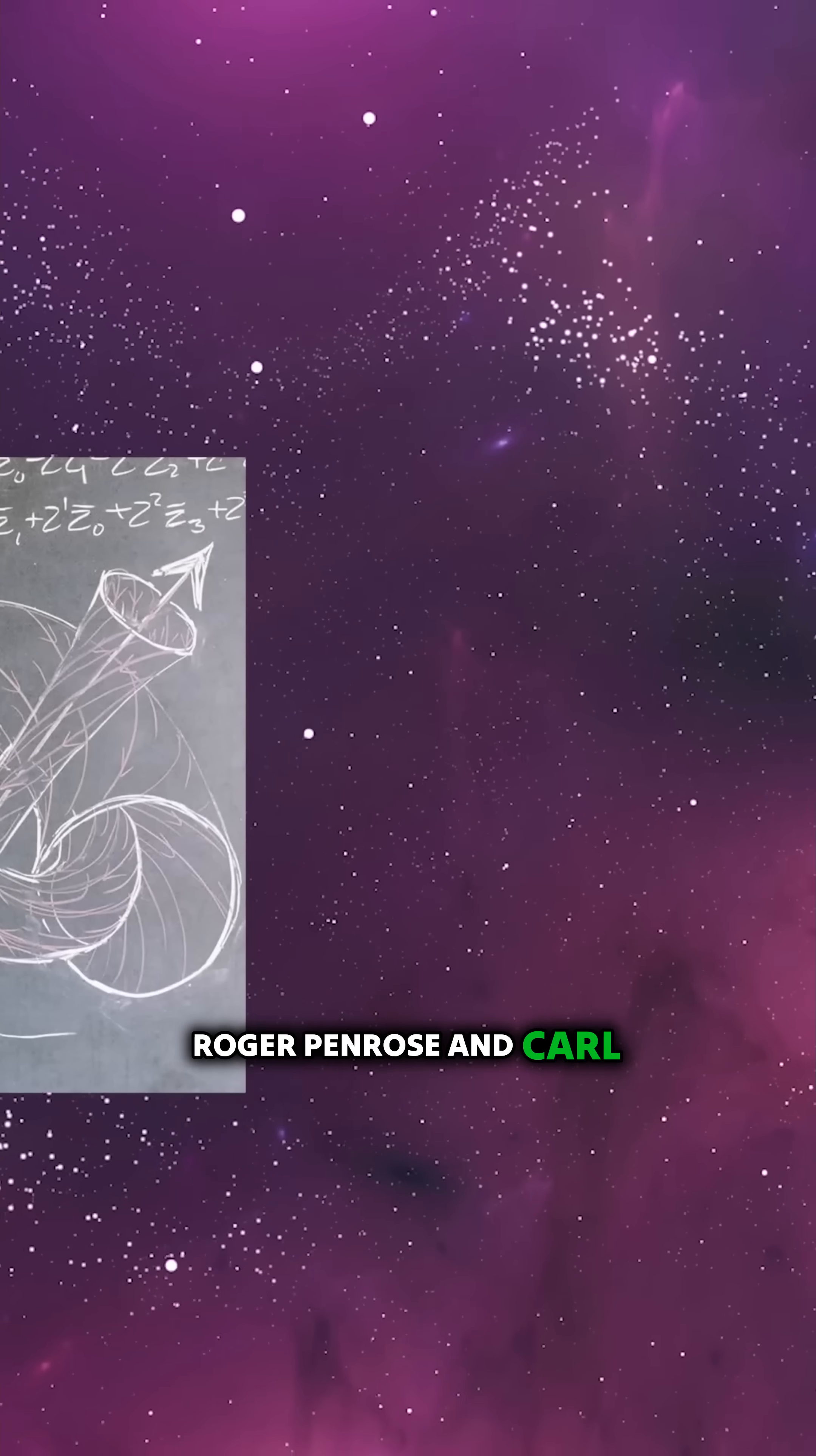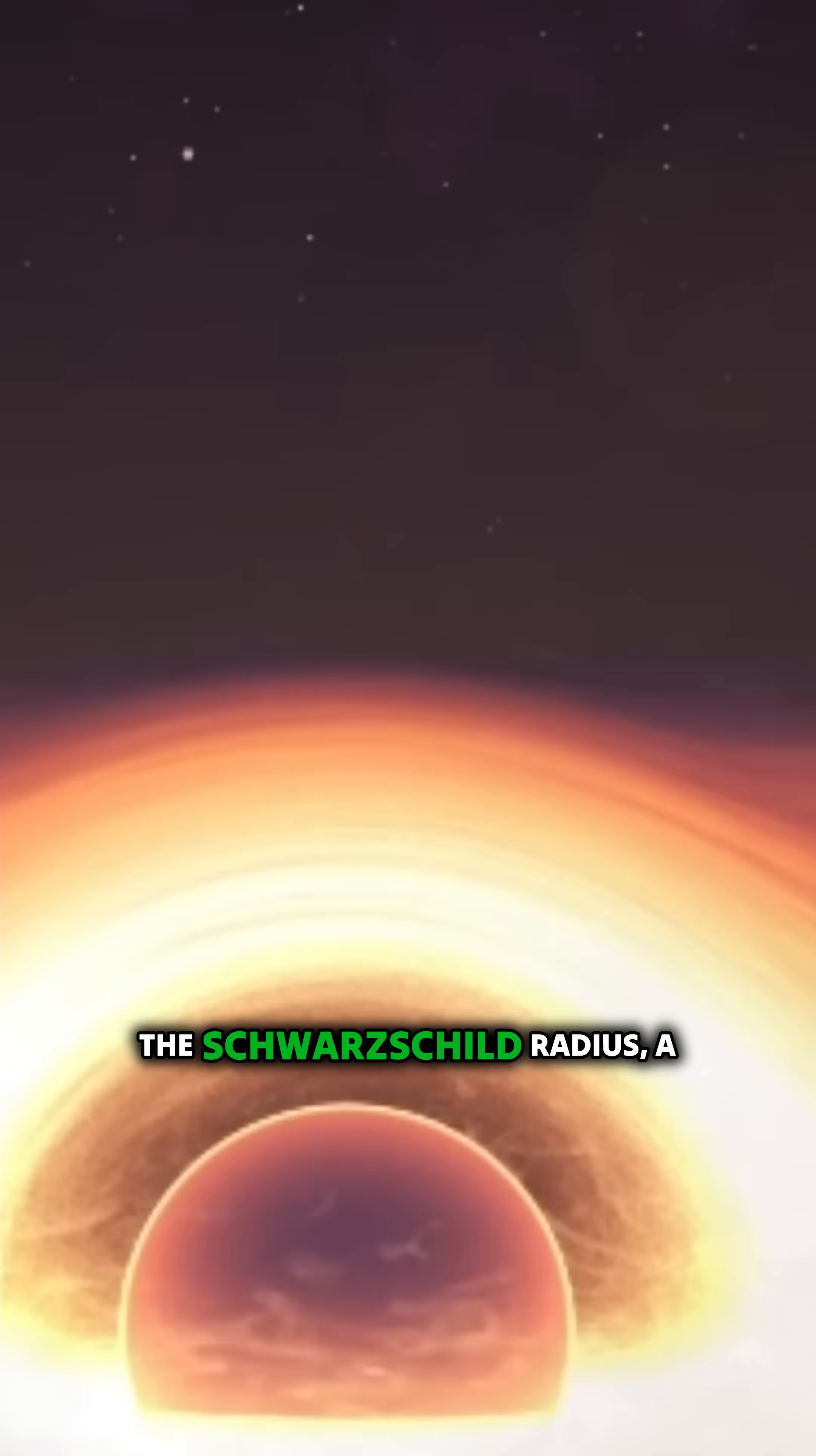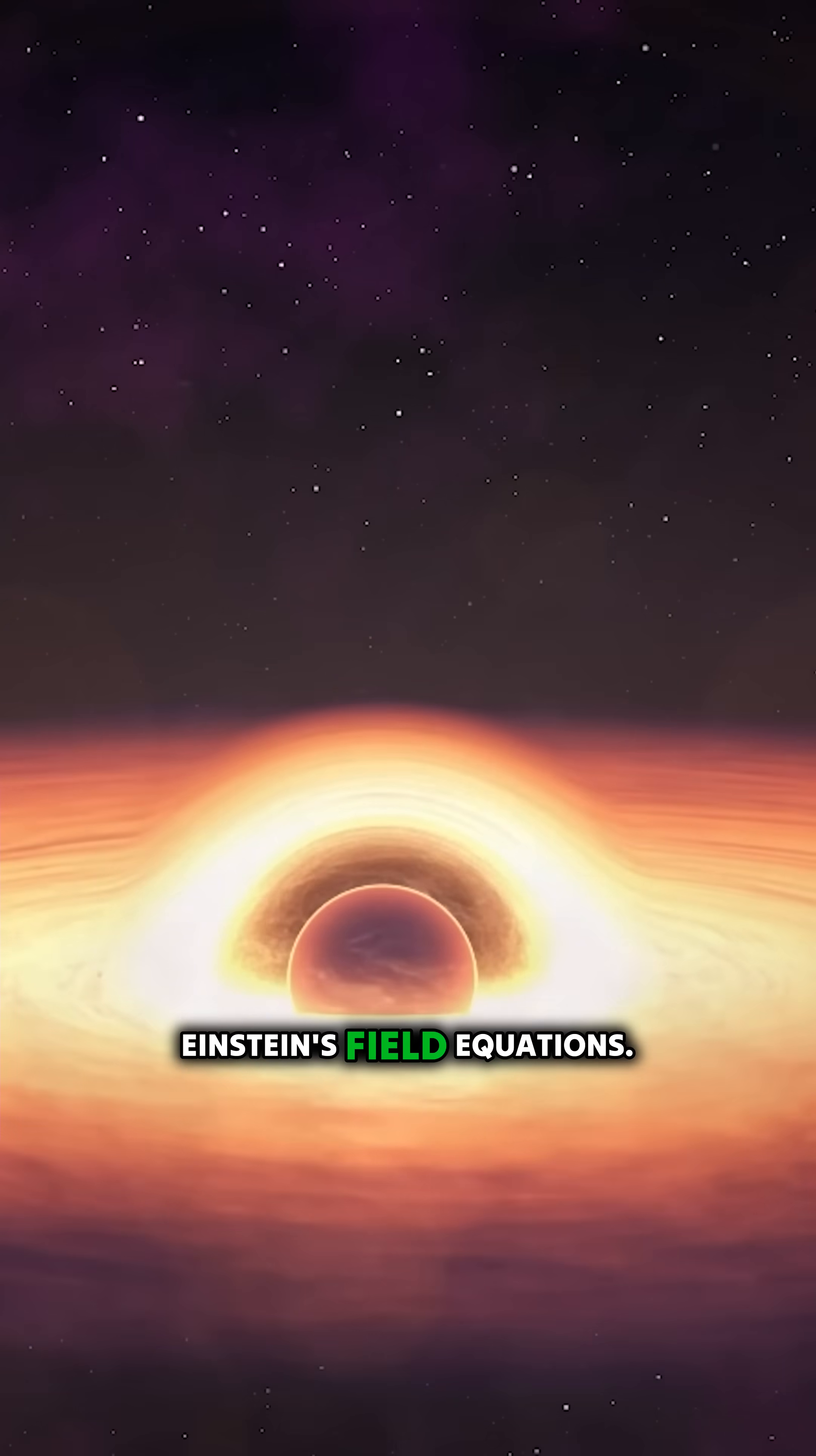Roger Penrose and Carl Schwarzschild, among others, have made substantial contributions to the theory of black holes. The Schwarzschild radius, a measurement of the event horizon's size, was developed as a result of Schwarzschild's solution to Einstein's field equations.